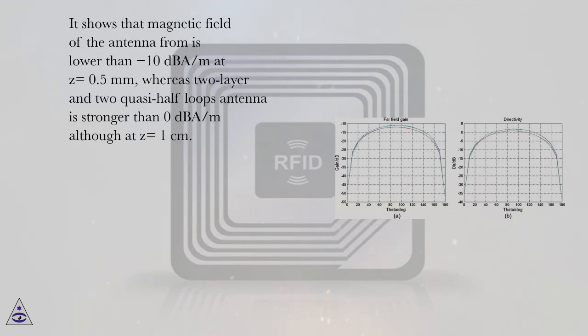It shows that magnetic field of the antenna from reference is lower than minus 10 dB/m at z equals half a millimeter, whereas two-layer and two quasi-half loops antenna is stronger than zero dB/m at z equals one centimeter.